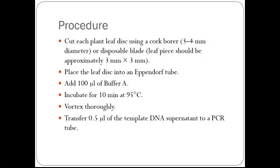Procedure: Cut each plant leaf disc using a cork borer 3 to 4 mm diameter or a disposable blade. The leaf piece should be approximately 3 mm by 3 mm. Place the leaf discs into an Eppendorf tube. Add 100 µl of Buffer A. Incubate for 10 minutes at 95 degrees centigrade, then vortex thoroughly. Transfer 0.5 µl of template DNA supernatant to the PCR tube.